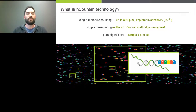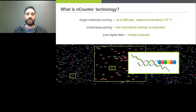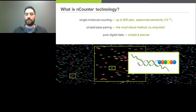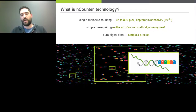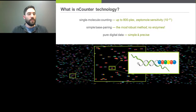We can count up to 800 different targets per sample with optimal sensitivity in the hundreds of molecules. This counting is done through a simple base-pairing hybridization technique — very robust, no enzymes necessary, very different from a qPCR-type assay. It produces purely digital data, so you get just counts or numbers for each gene of interest. Each barcode consists of a biotin capture molecule on the left and a reporter with six color channels on the right, which the instrument images and counts.